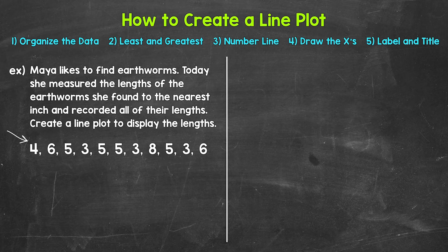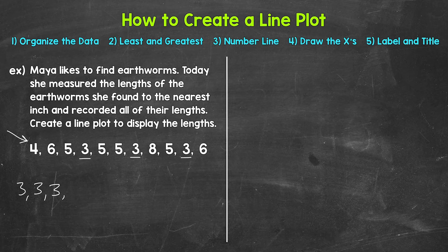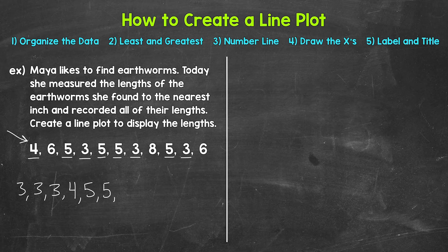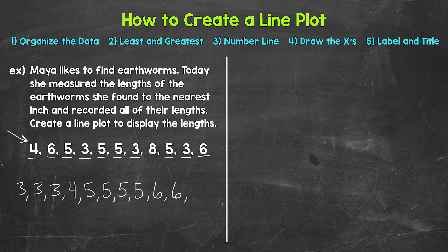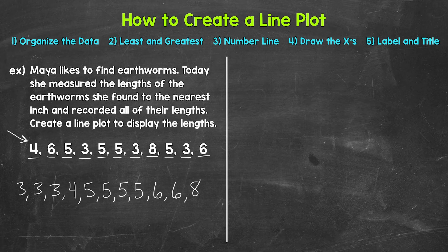Starting with the least, we have three — three earthworms were three inches. Then we have one earthworm that was four inches. Moving to five, we have four earthworms that were five inches. For six, there were two earthworms that were six inches. We don't have any sevens — none of the earthworms were seven inches. And finally, there was one earthworm that was eight inches. That's all of our data organized from least to greatest.